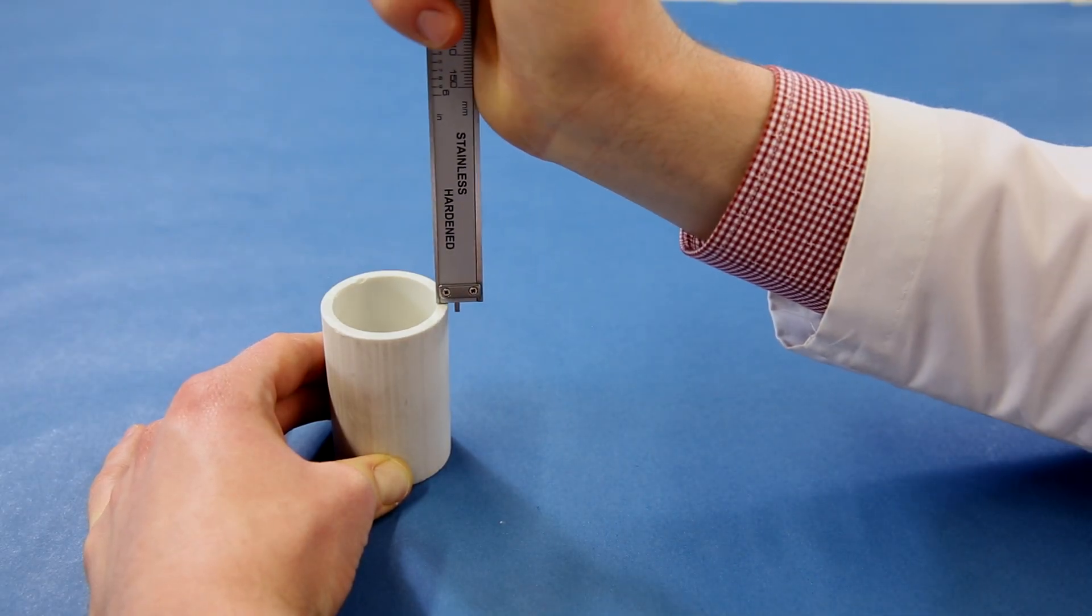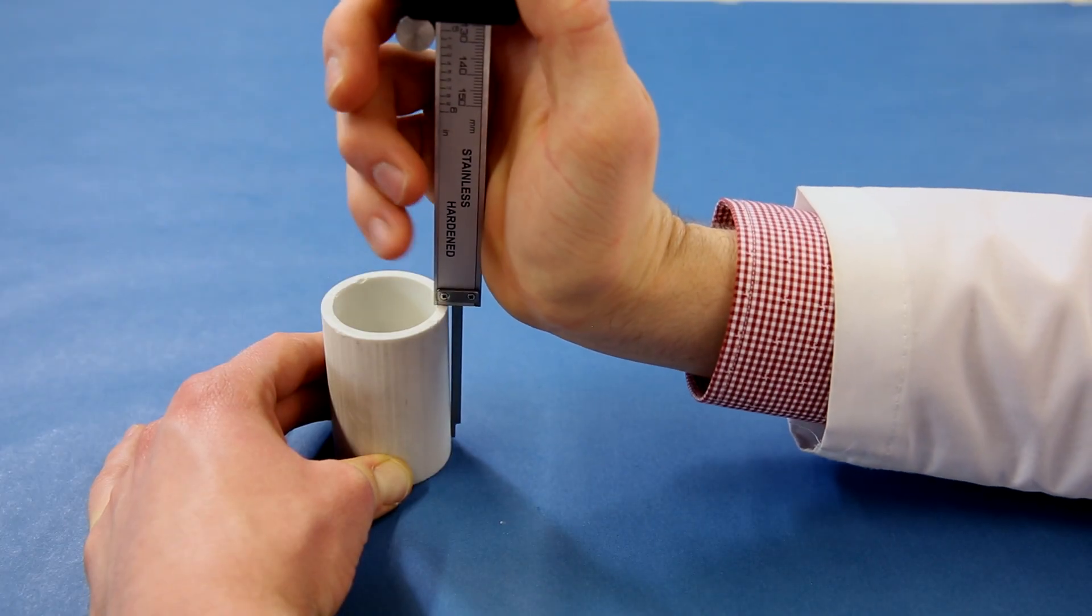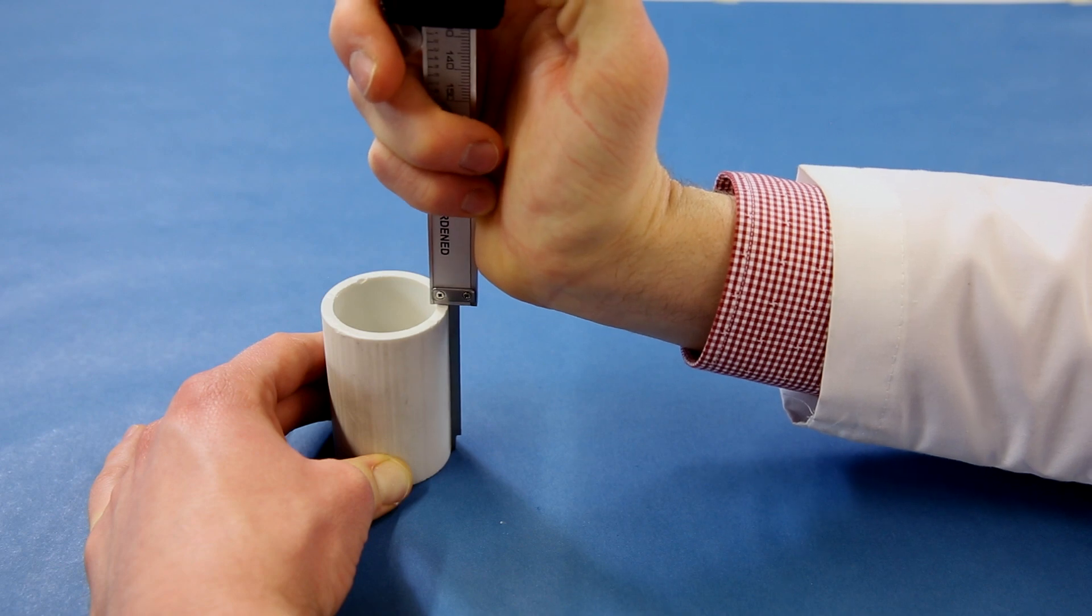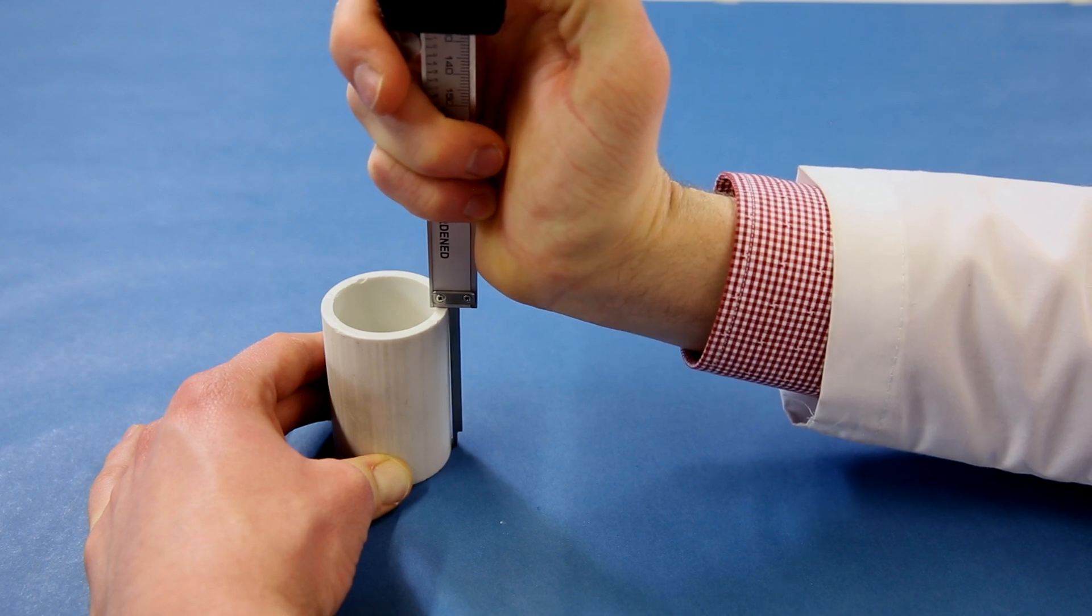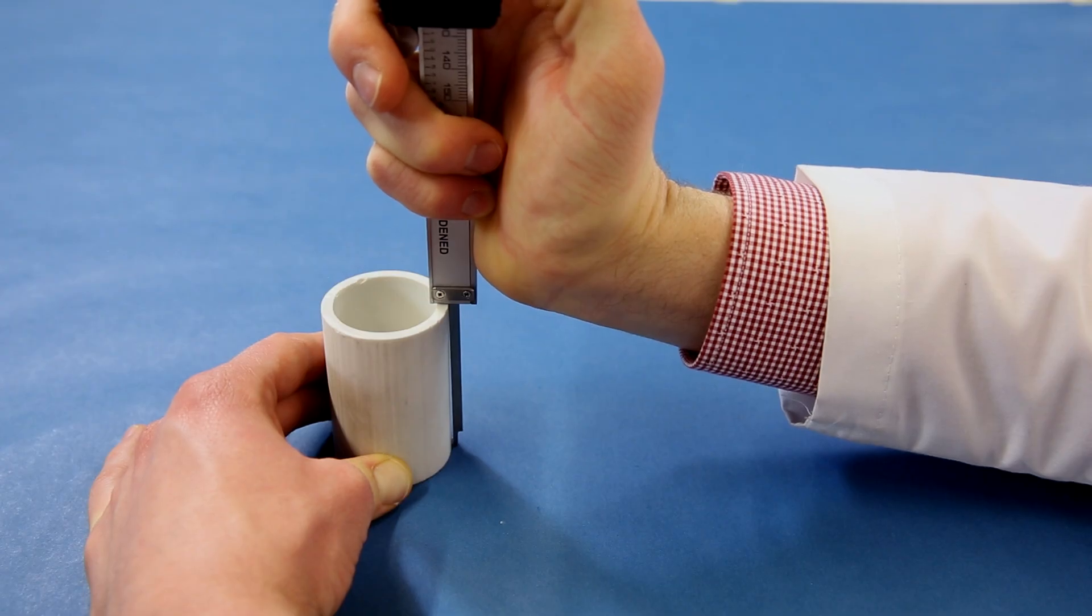Finally, you can use the depth rod to measure the depth of an object or hole. Rest the main scale part of the caliper on the object and move the slider until the depth rod reaches the bottom of the hole or surface. You will want to make sure your bottom surface is flat and that everything is at right angles to get the most accurate reading.